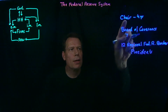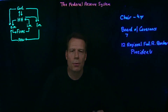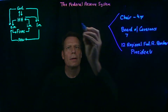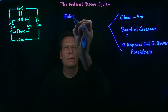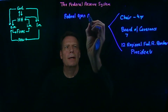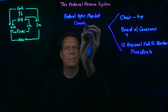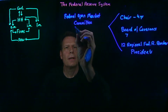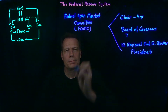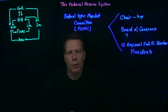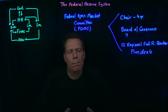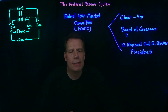Together, the chair, the Board of Governors, and the 12 regional Federal Reserve presidents compose what we call the Federal Open Market Committee, also known as the FOMC. The Federal Open Market Committee meets every eight weeks in Washington, D.C., and they set monetary policy. In those meetings, they vote on what monetary policy will be going forward.